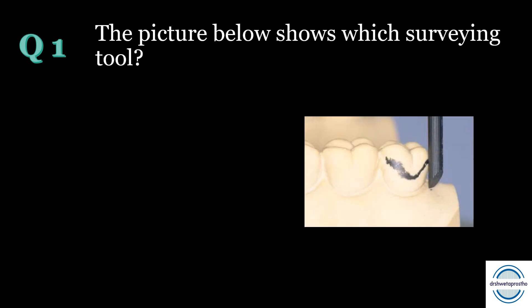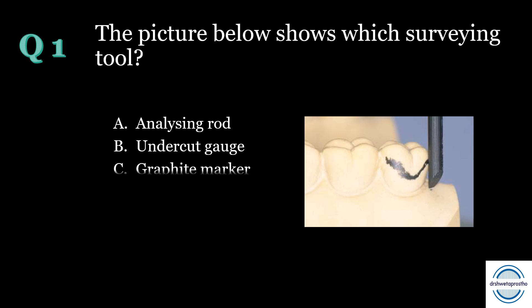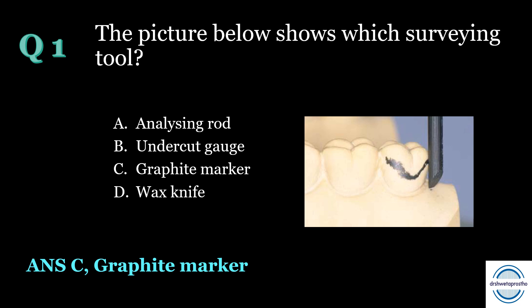Question number one: the picture below shows which surveying tool? A. Analyzing rod, B. Undercut gauge, C. Graphite marker, D. Wax knife. The answer is C, graphite marker. A graphite marker or carbon marker is a parallel-sided carbon rod which is used to mark the survey line on a crown or on a cast. I have given a link to revise the surveying tools in the description box.